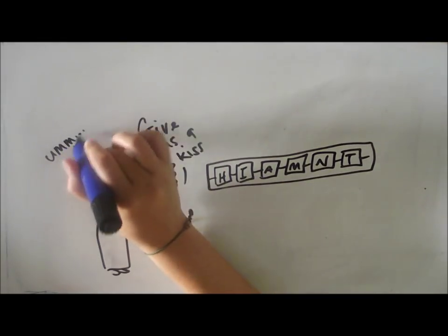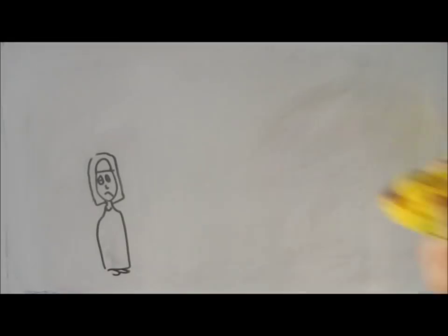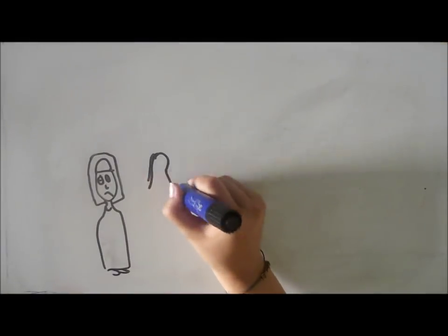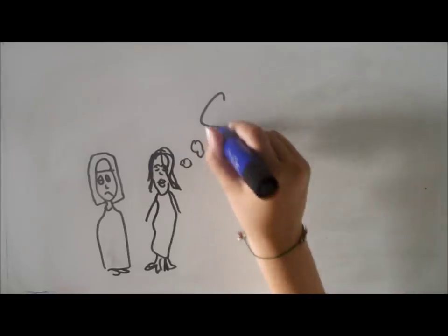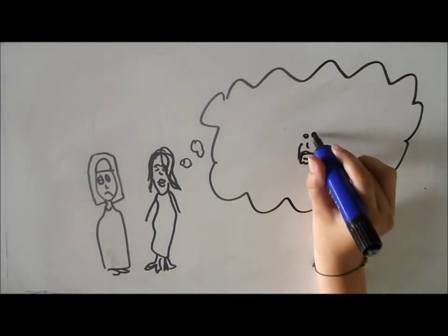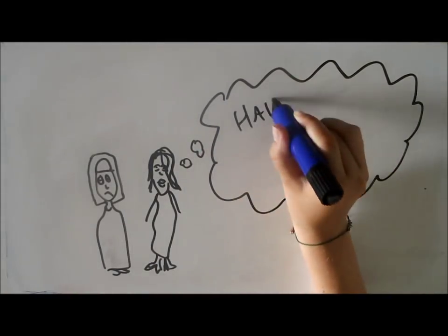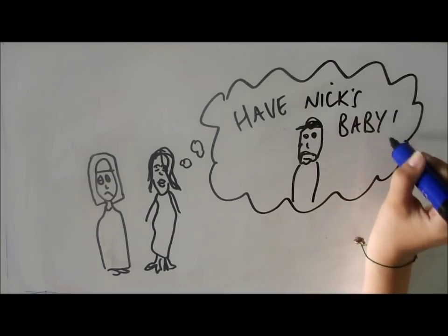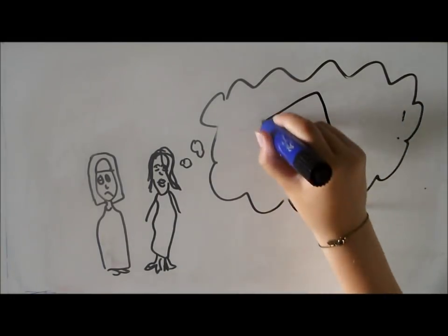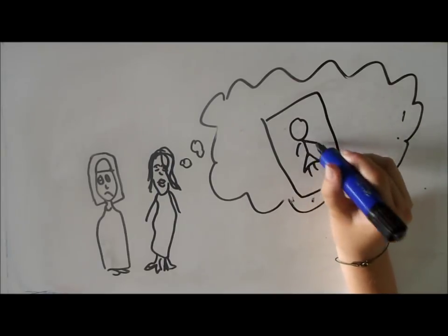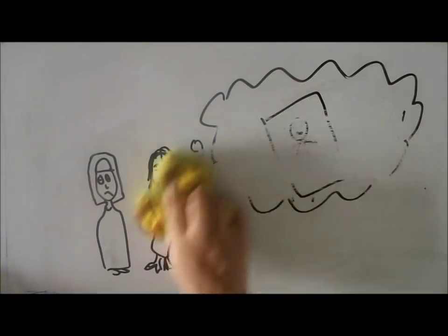All of this goes on without Serena Joy knowing. A lot more time passes without Offred getting pregnant and then Serena Joy suggests that she have sex with Nick and then pass the baby off as the commander's. If she does this, Serena promises to bring Offred a picture of her daughter who she has not seen since they were separated and who she assumed was dead. Offred is really angry because she realizes that Serena has always known about the whereabouts of her daughter.